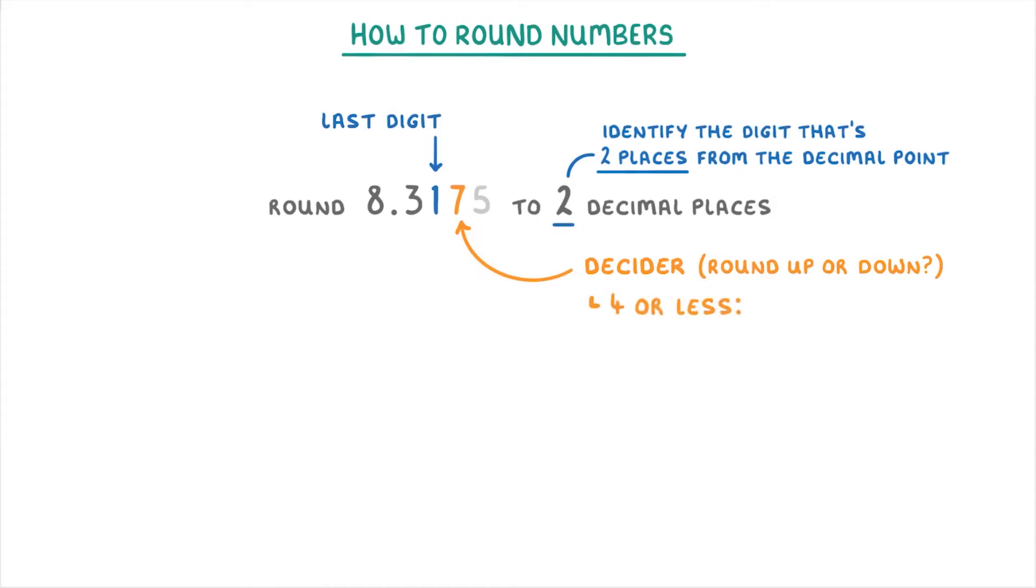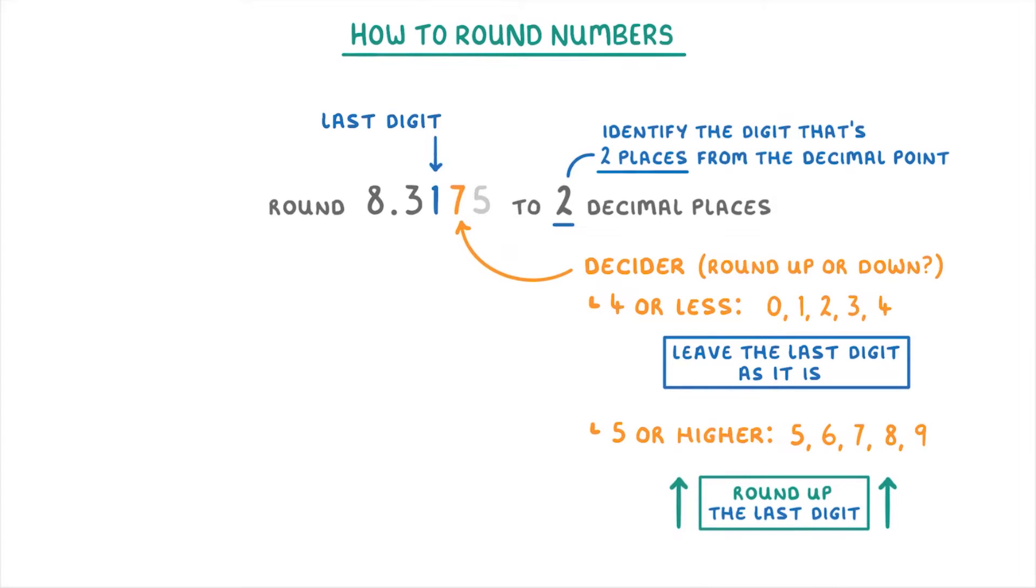If the decider is 4 or less, so 0, 1, 2, 3, or 4, then we leave the last digit as it is. But if it's 5 or higher, so 5, 6, 7, 8, or 9, then we round up the last digit.